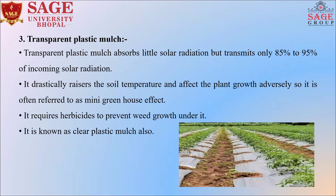The third is transparent plastic mulch. Transparent plastic mulch absorbs little solar radiation but transmits 85 to 95% of incoming solar energy. It drastically raises the soil temperature, which can affect plant growth adversely, so it is often referred to as the mini greenhouse effect. Transparent plastic mulch requires herbicide to prevent weed growth under it. It is also known as clear plastic mulch.